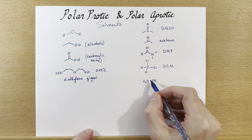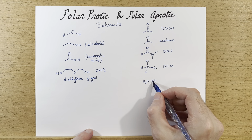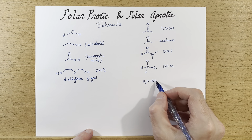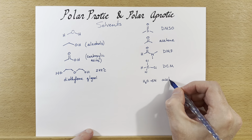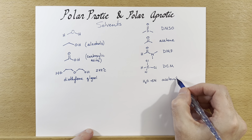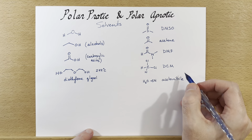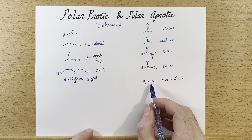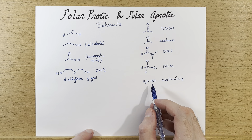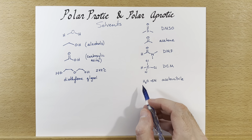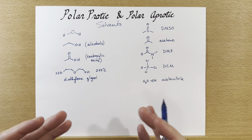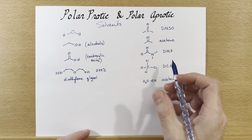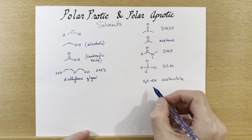There's also acetonitrile: a methyl group attached to a nitrile group. Acetonitrile gets used a lot in chromatography because of its optical properties and because it's polar. You can mix it with water and run reactions in it as well.